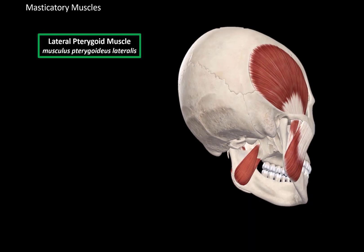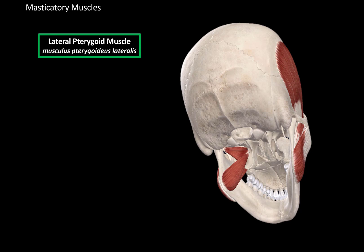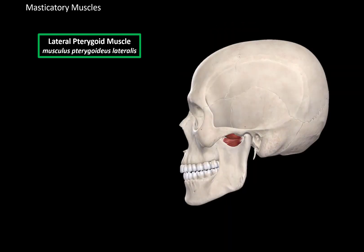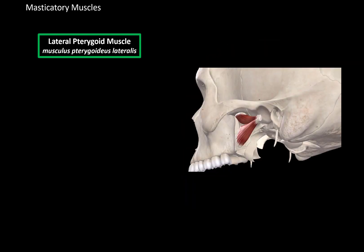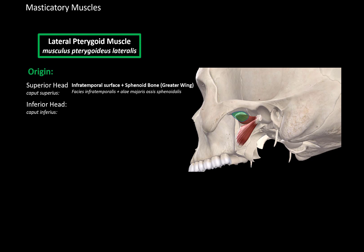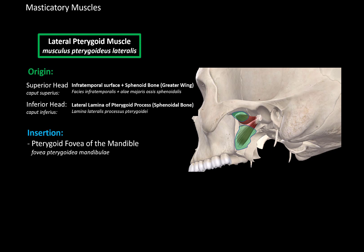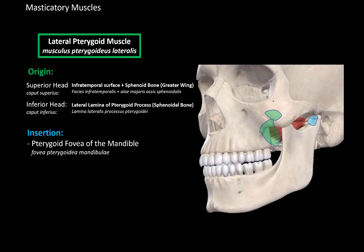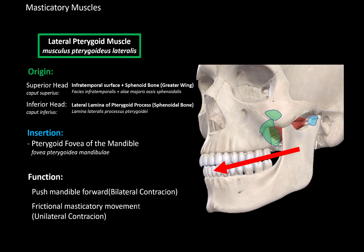Lastly, we have the lateral pterygoid muscle, which is located laterally to the medial pterygoid. Removing the other muscles and the mandible, we can see it clearly. It is divided into two parts: the superior head, which originates from the infratemporal surface and the sphenoid bone, and an inferior head, which originates from the lateral lamina of the pterygoid process. These two heads join together and insert at the pterygoid fovea of the mandible. The function of this muscle is to move the mandible forward when both sides contract, or to produce a frictional masticatory movement when only one side contracts.